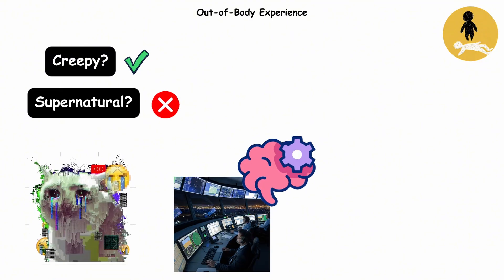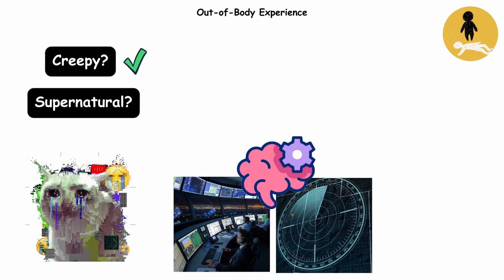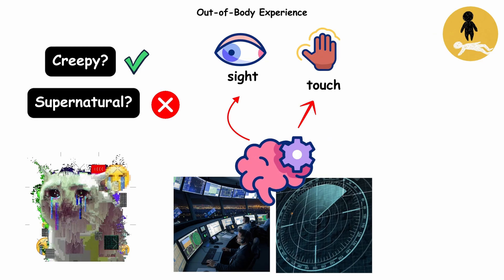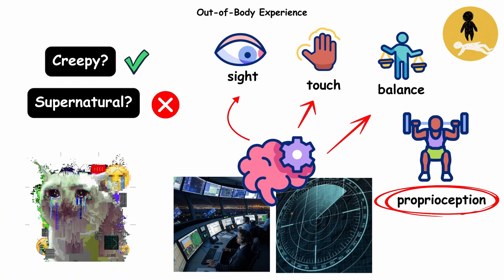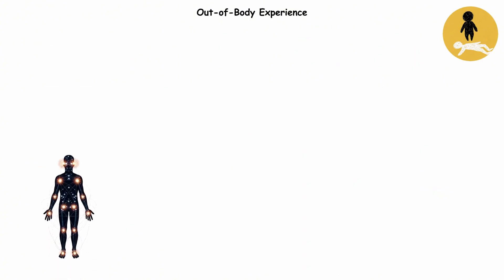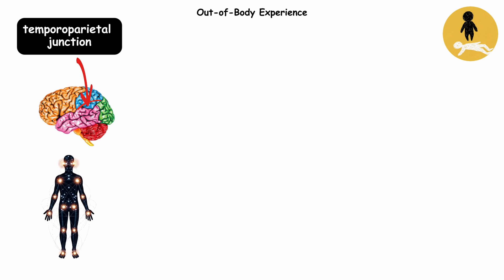Your brain is the air traffic controller. It constantly monitors your position using sight, touch, balance, and proprioception. That's the fancy word for knowing where your limbs are without looking. All that data normally gets merged in the temporoparietal junction.